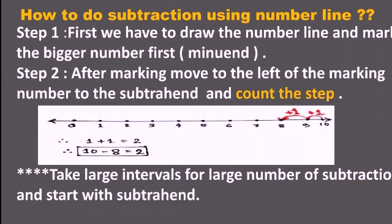I have given here one example: 10 minus 8 equals what? I have written from 0 to 10. If you write after 10, that is also right. But as the minuend is 10 here, I have marked 10. Next, after marking, you have to move to the left — the left side of the line.